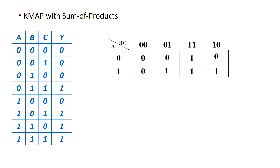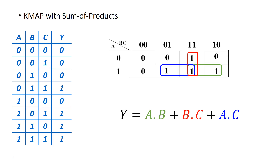We used the largest grouping of 1s. In this particular case we found a group where variable A does not change and B does not change — for that green group, A is equal to 1 and B is equal to 1, so we write A and B. Here's another group where variable B does not change and C does not change, written as B and C. Finally, a third group where A is equal to 1 and C is equal to 1, written as A and C. So overall the simplified Boolean expression is Y equals AB or BC or AC.